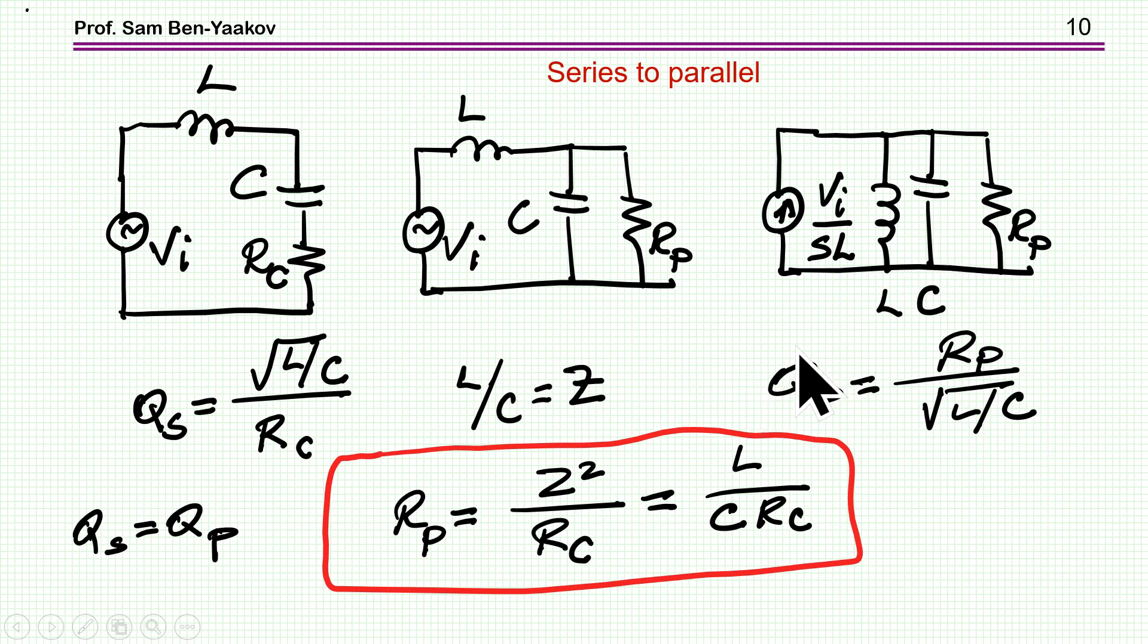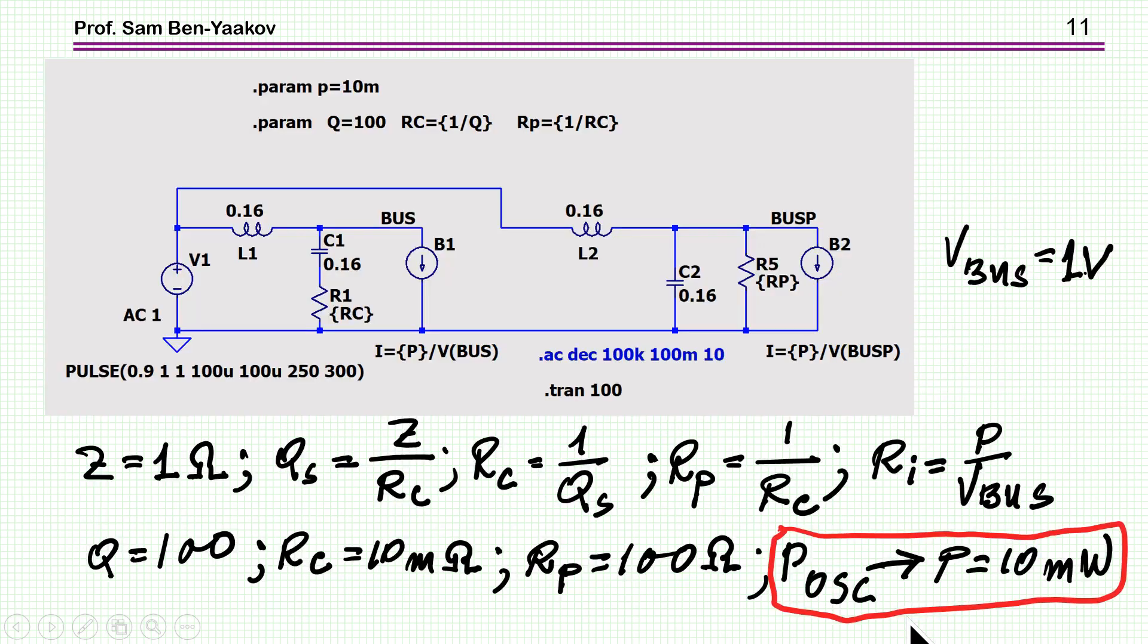And what is the quality factor here? Here, it is the reverse. This is the resistance divided by the characteristic impedance. Equating these two, I am getting that R_P, this resistance, the parallel resistance, the equivalent parallel resistance describing this case, is equal to L over C. This is Z squared divided by R_C. R_C is the original circuit. So, now I have a tool to transfer this to this, which makes it easier. So, let's see if all what I've said holds water.